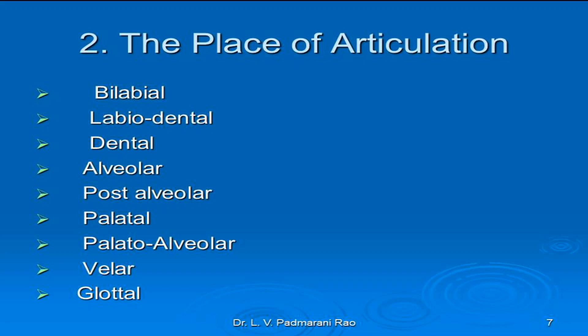The second place of articulation is labiodental — sounds articulated by the lower lip and the upper teeth. Labio is lips, dental is teeth. The examples are F as in 'fan' and V as in 'van'. The third is dental sounds — sounds articulated by the tip of the tongue against the teeth. The examples include TH as in 'thing' and TH as in 'this'. These TH sounds are the dental sounds in English.